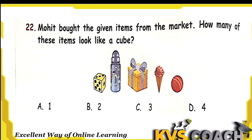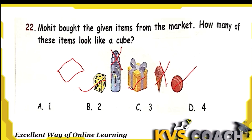The next question: Mohit bought the given items from the market. How many of these items look like a cube? A cube has a square surface. The dice has a square surface — that is a cube. The gift box also has a square surface — that is a cube. Ice cream is not a cube. So 2 items have a cube-like structure. Option B is the right answer.